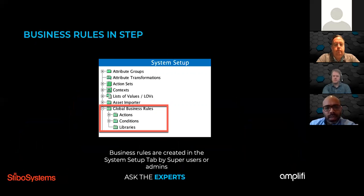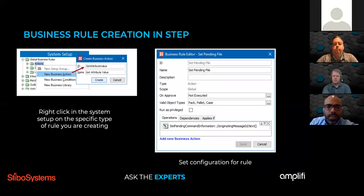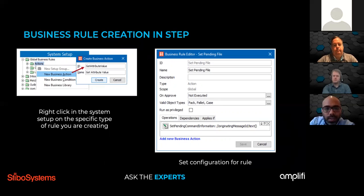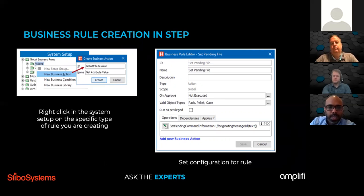This shows how you create a business rule in Step, done in the workbench under the system setup tab. You go to the business rules tab, right-click, and create a new business action. You can specify whether this business rule should execute on approval, which object types it's valid for, and you also have the option to run it as privileged — executing the business rule without regard to the permissions you have.